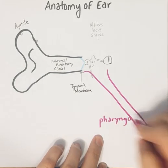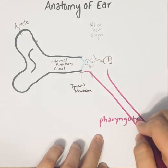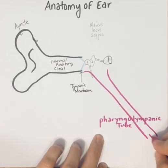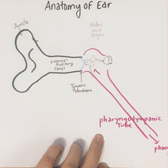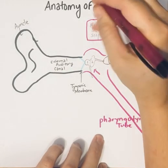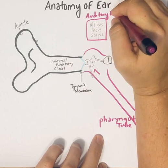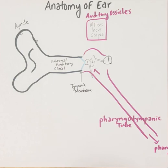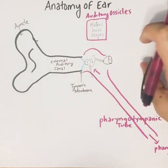The word pharynx means throat. Pharyngo means pharynx — you put an O to connect it — tympanic connects to the tympanic membrane. So the pharyngotympanic tube leads down to the pharynx and up toward the tympanic membrane. The malleus, incus, and stapes are your auditory ossicles, all part of the middle ear. The job of the middle ear is to amplify sound waves to the inner ear.